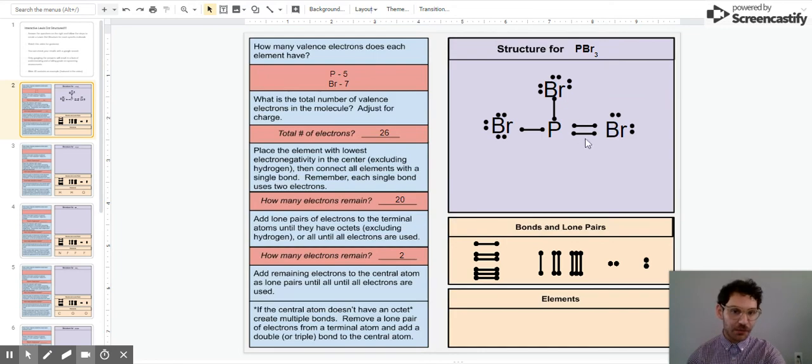This bromine is still happy. It's got four electrons from bonding and four from lone pairs, that's eight - a nice octet. My phosphorus now has eight electrons from bonding, also an octet. So that's how we would make double bonds, even though we didn't need to for this molecule. That's the end of this video. I hope you understand how to use this document and draw Lewis structures.